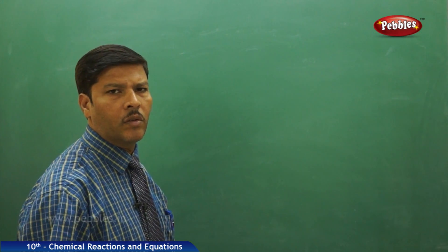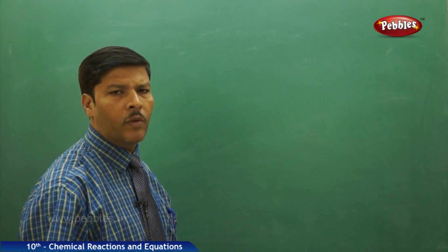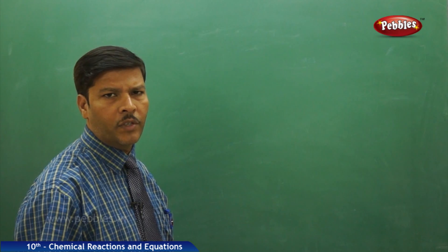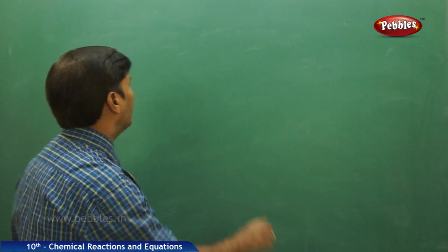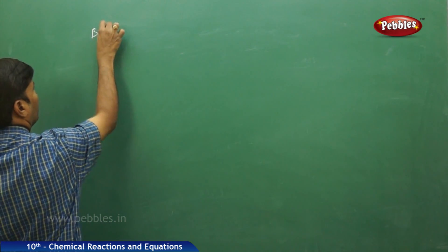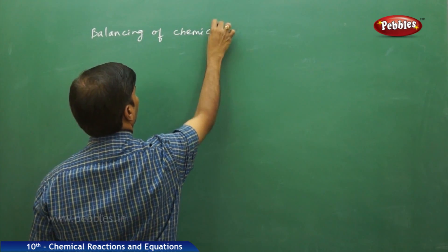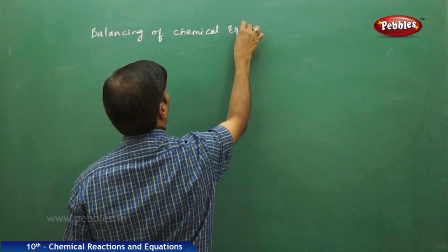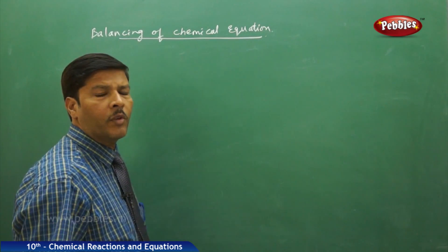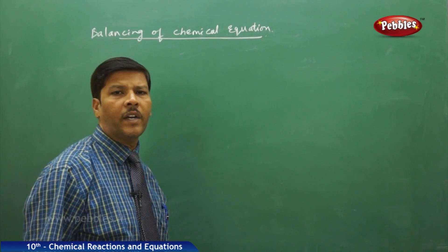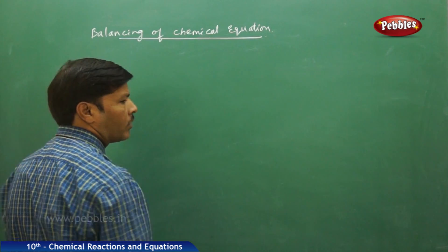Let us totally concentrate on how to balance chemical equations. After studying the meaning of formula units in a chemical equation, now let us start focusing on how to balance a chemical equation. A chemical equation is made up of reactants and products. The reactants are made up of reactant molecules and the products are made up of product molecules.